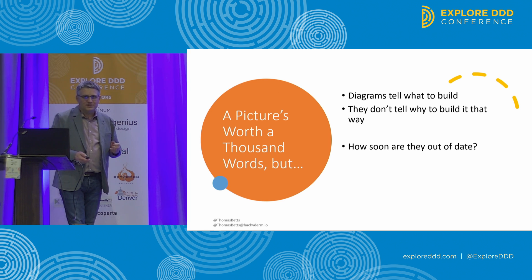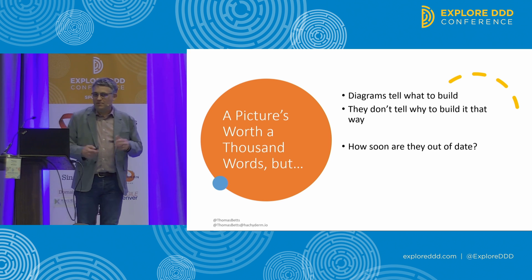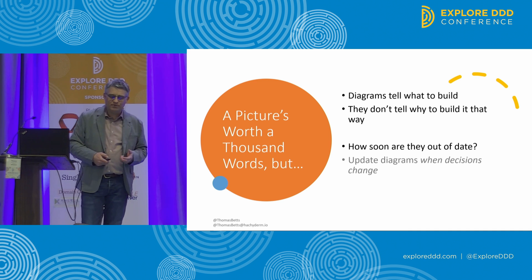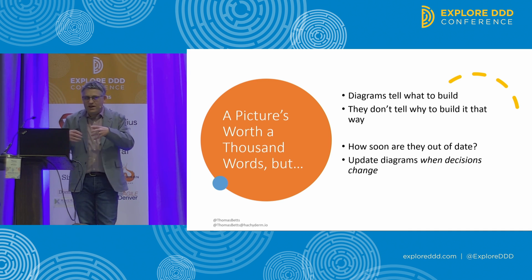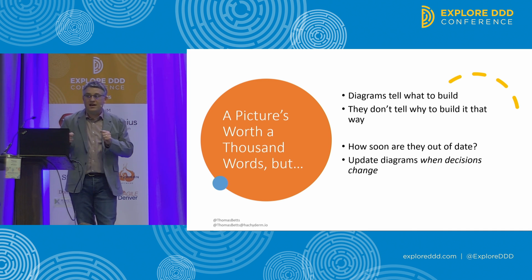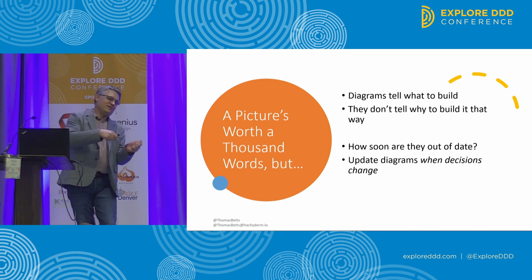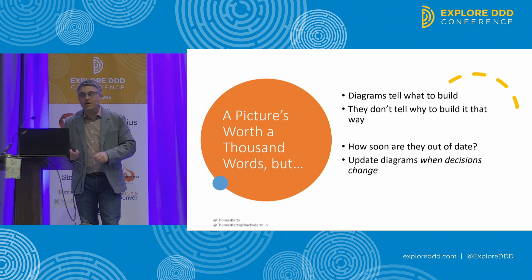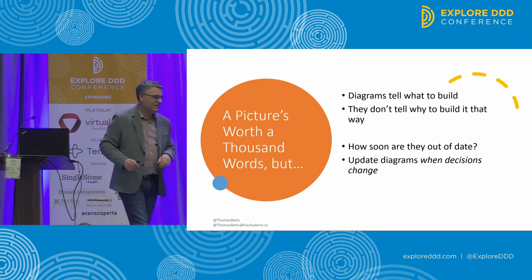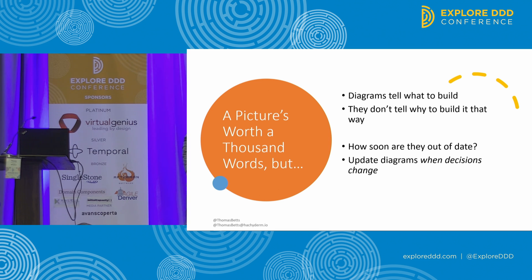Something else going on with diagrams is they are notoriously out of date. You need to change your diagrams any time one of your decisions changes. Too often we have implicit changes — we drew the diagrams, said go for it, and then a month later, 'That didn't work, we're going to implement it a little differently.' Go back and update the diagram? Never gets said. Nobody does that.